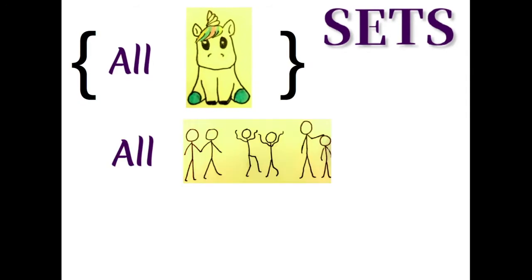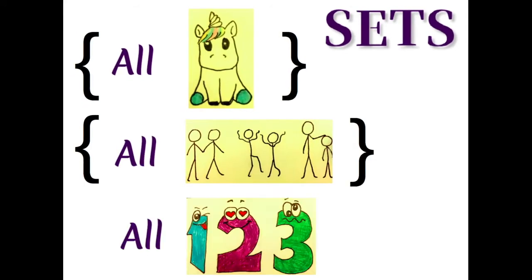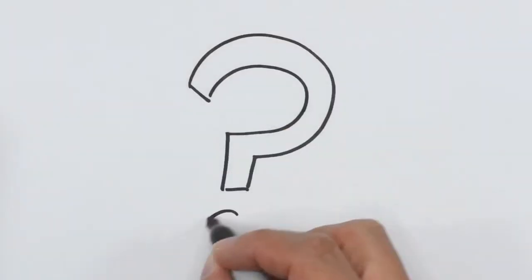The set of all unicorns, the set of all humans, and the set of all numbers. Okay, but what is a set? Great question.